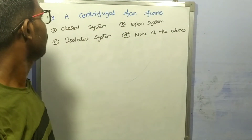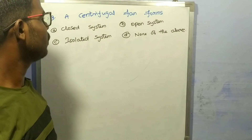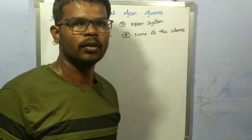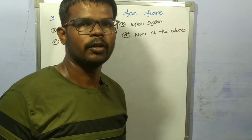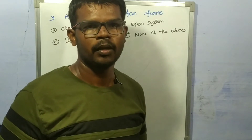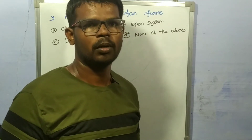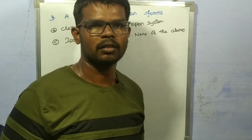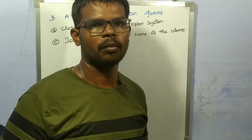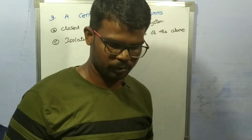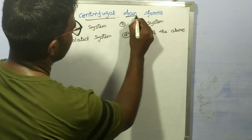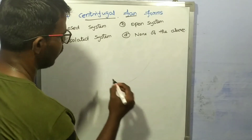Third question: a centrifugal fan forms — options are: A) closed system, B) open system, C) isolated system, D) none of the above. In a closed system, there is no mass transfer across the boundary. In an open system, both mass and energy transfer across the boundary. In an isolated system, there is no mass nor energy transfer.